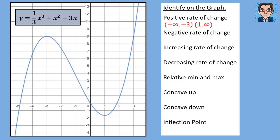A negative rate of change means where is the function going down? Starting from negative 3 and going all the way to positive 1, on that interval the graph is going down. If you were to take any secant line on that section, you would have a line with a negative slope. So the negative rate of change happens on the interval of negative 3 to 1.